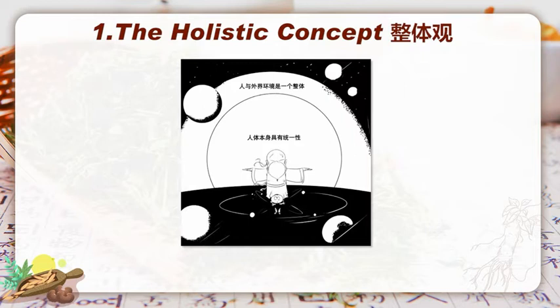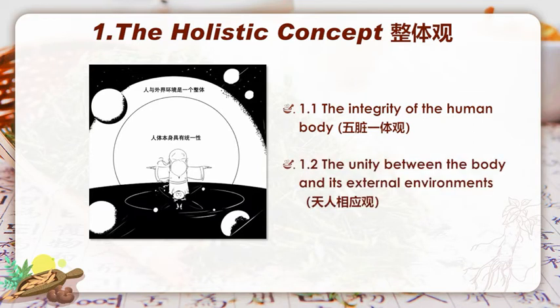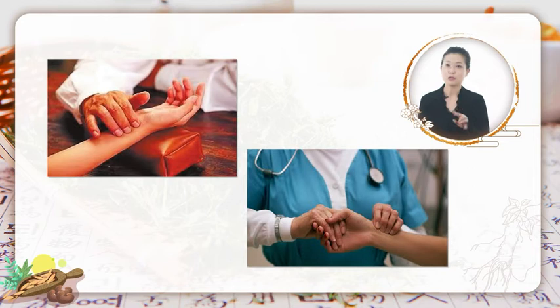Let's look at this picture. In brief, the holistic concept holds the view that a man lives on the earth, his body is a holistic unit. Moreover, he and the external environments where he lives are united together, which in TCM are known as the integrity of the human body and the unity between the body and its external environments.